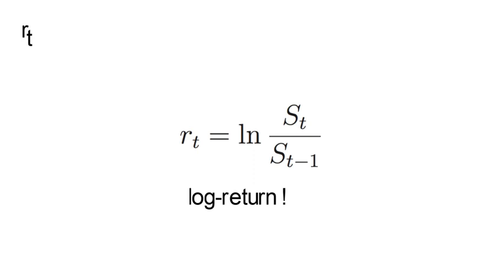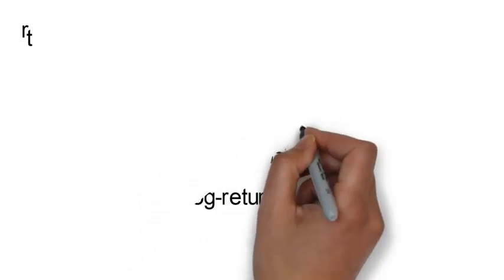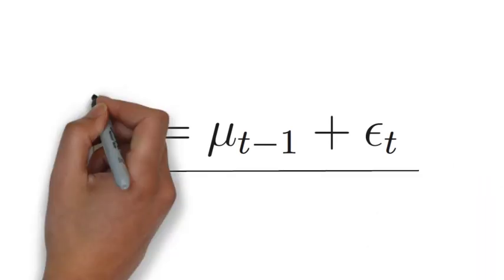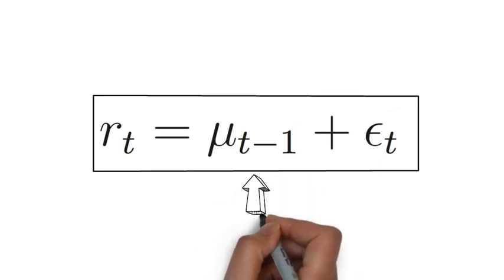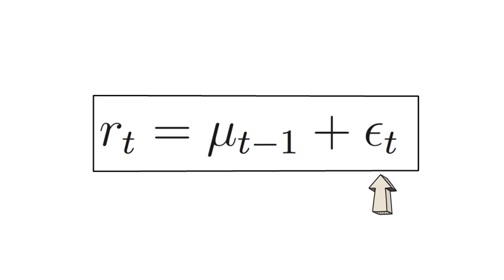Now that example teaches us that each return has a predictable and an unpredictable component. We will write that as follows, where the predictable component as of time t-1 is called mu t-1. We call the unpredictable component epsilon t. Epsilon t is also called the noise component.